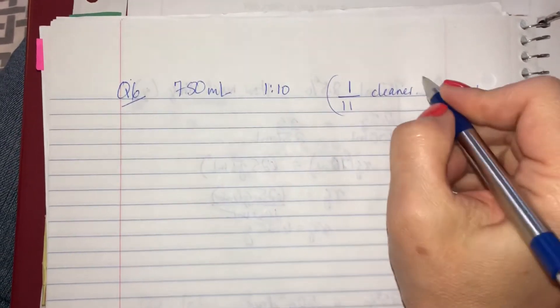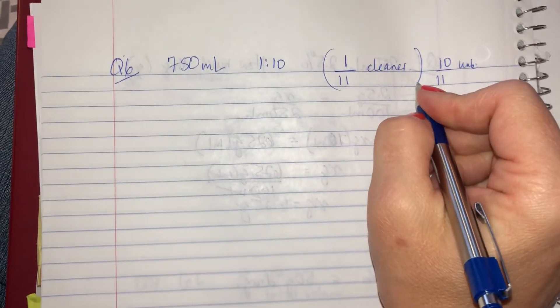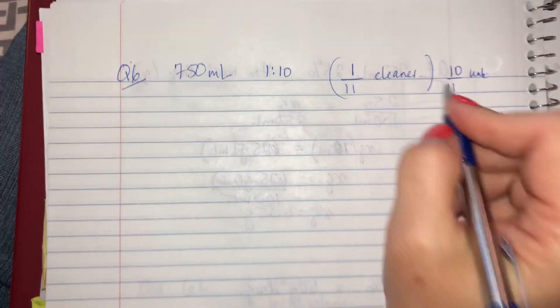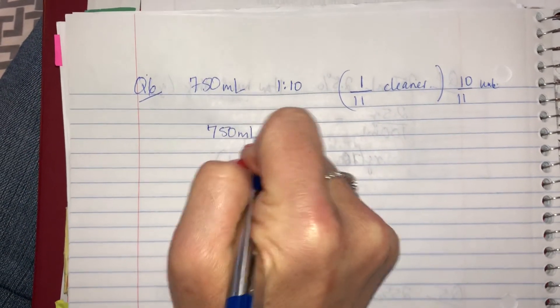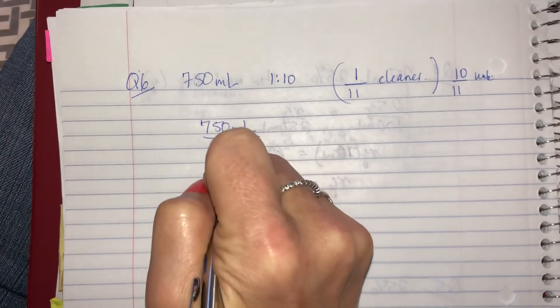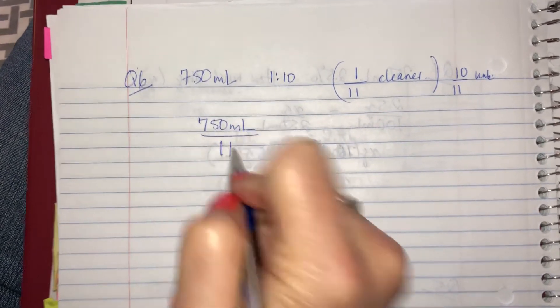This is the one we're worried about because the question was, how many mils of disinfectant will I need? So if I have a total of 750 mils in the bottle, I want to know how to break it up into 11 parts completely.